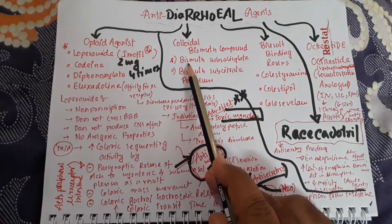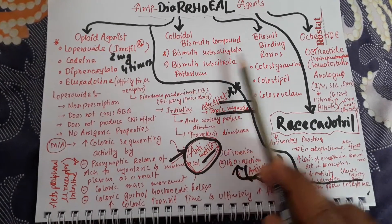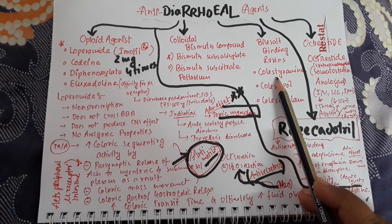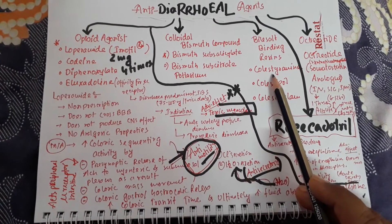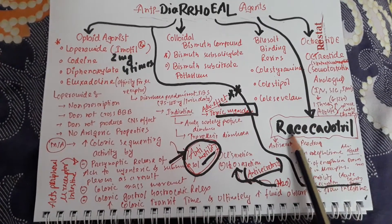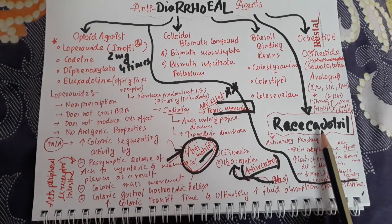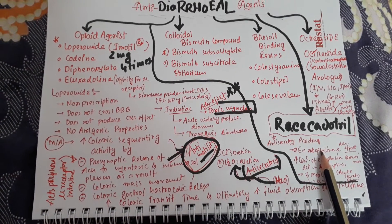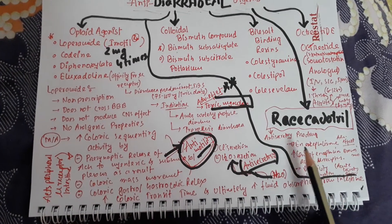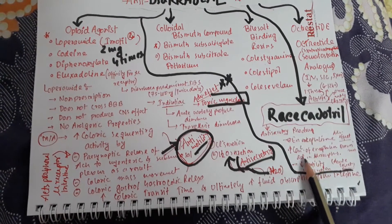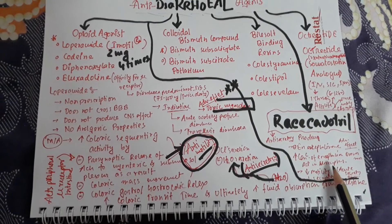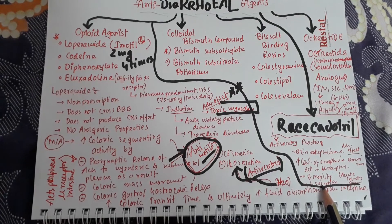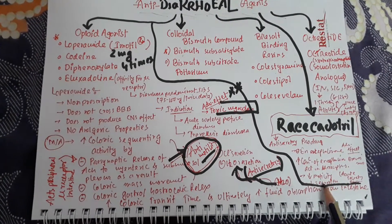The second class is colloidal bismuth compounds — bismuth subsalicylate and bismuth subcitrate potassium — which will be discussed later. Another class is bile salt binding resins such as colestipol and colesevelam, which are not widely used in diarrhea cases due to limitations and adverse effects. Currently, racecadotril is used — it is a peripheral enkephalinase inhibitor and a prodrug with anti-secretory action. It inhibits enkephalinase peripherally, so endogenous enkephalins are not degraded, increasing their concentration. These enkephalins act on mu receptors, decrease colonic motility, and decrease water secretion into the colon, producing anti-secretory action.